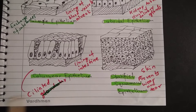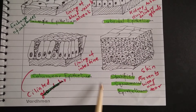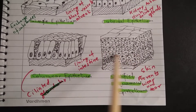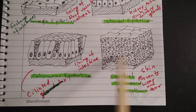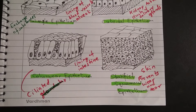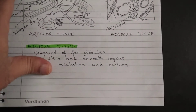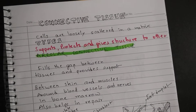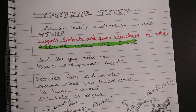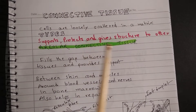The fourth type is stratified squamous epithelium. In this case there are numerous layers of cells — because of these multiple strata, it is called stratified squamous epithelium. It is present in the skin, and the many layers prevent wear and tear of the skin. That is its main advantage.